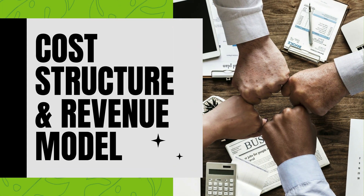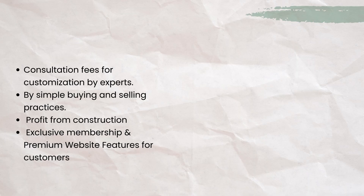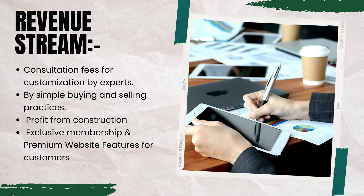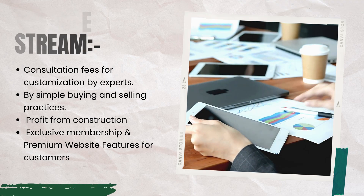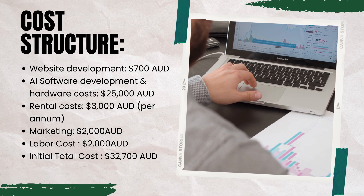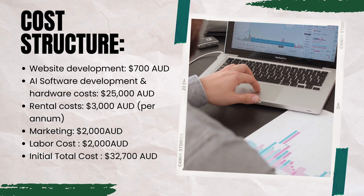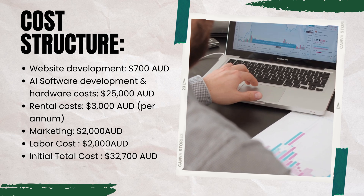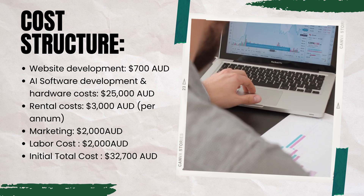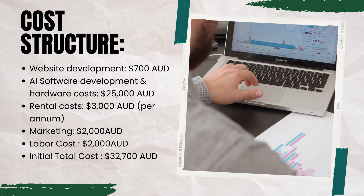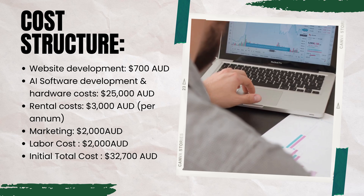Our revenue streams include consultation facilities, memberships, buying and selling practices, and profits from construction. The major key costs include website and AI software development, marketing, hardware costs, labour and rental costs, summing up to 32,700 Australian dollars.